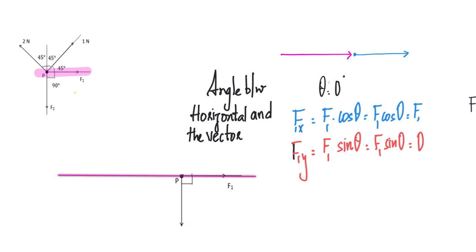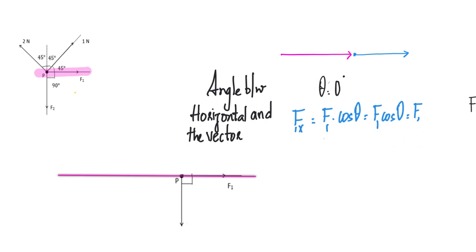This is F1. I'm going to use the horizontal as the reference, so every force will be resolved with respect to the horizontal. The angle between the horizontal and F1 is 0 degrees. Because this is purely a horizontal force, the only component present is F1 itself — there is no vertical component.